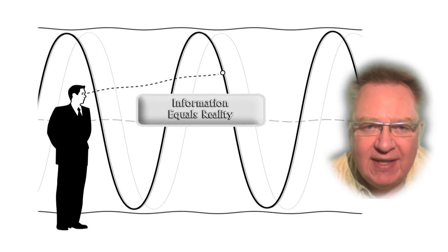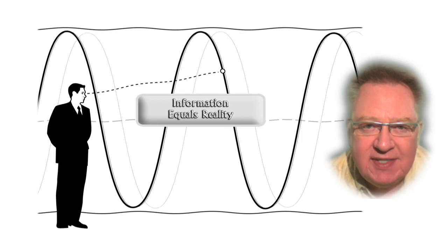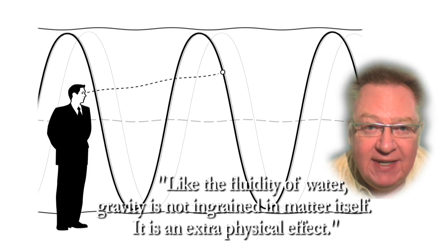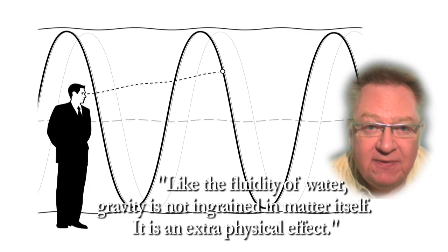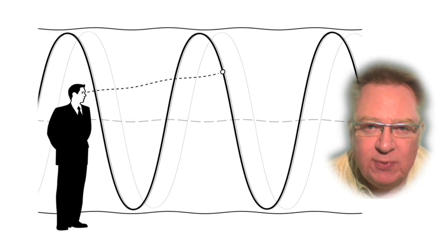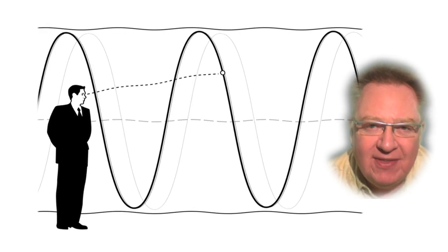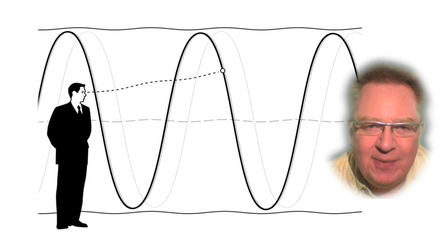In the New Scientist article on Dr. Verlinde's new approach, they sum it up like this: Like the fluidity of water, gravity is not ingrained in matter itself. It's an extra-physical effect. To which I would add, if there are parts of the multiverse where gravity is stronger, then we could liken that part of the multiverse landscape to syrup rather than water, and perhaps we could liken low-gravity regions to water vapour.